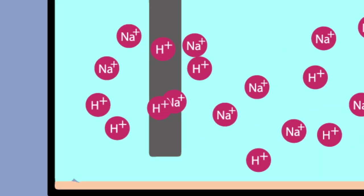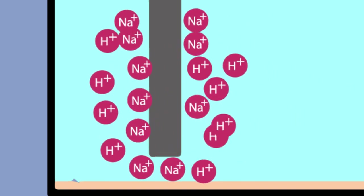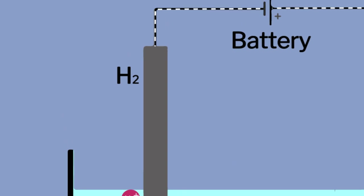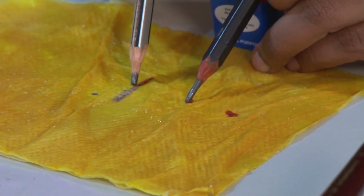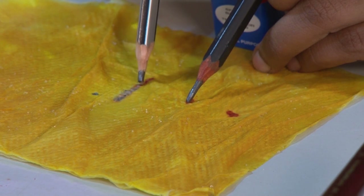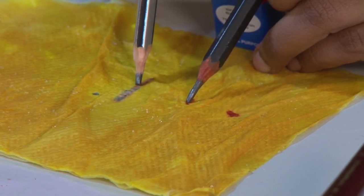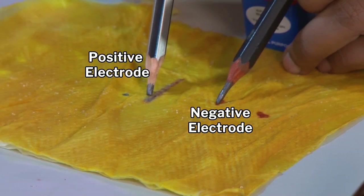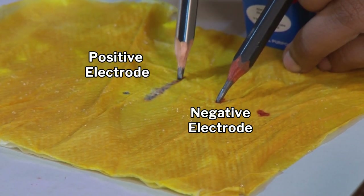When this chlorine gas comes in contact with surrounding moisture, it forms hydrochloric acid. At the same time, sodium ions and hydrogen ions move to the negative electrode, resulting in formation of hydrogen gas. When sodium ions come in contact with moisture, it forms sodium hydroxide, which is a strong base. Turmeric being a natural indicator turns red when it comes in contact with a base at the negative electrode, which is then neutralized by the acid formed at the positive electrode.